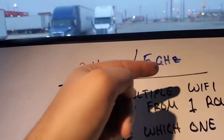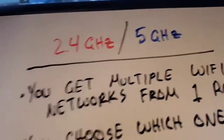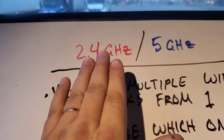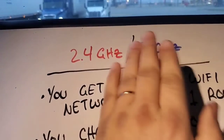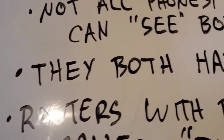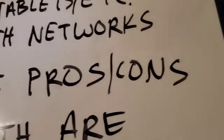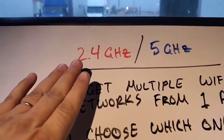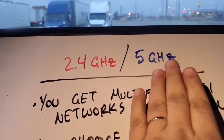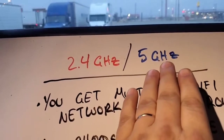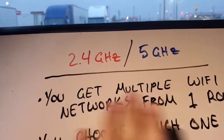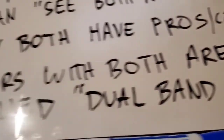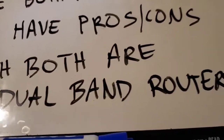Some devices cannot see both networks — they might only see the 2.4 gigahertz one, and the other won't even show up. Both bands have pros and cons, and it's up to you which one works best for your situation. Routers with both bands are called dual-band routers.